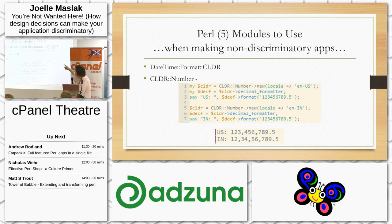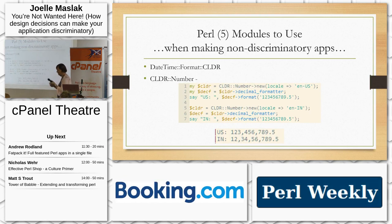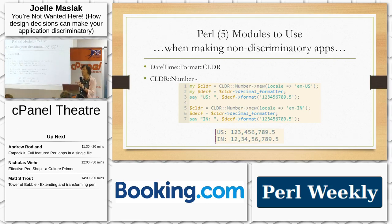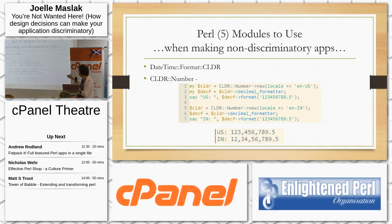Dates have the same issues. The two Perl 5 modules I recommend are DateTime::Format::CLDR and CLDR::Number. CLDR is the Unicode Common Locale Data Repository, which has information about how different locales represent dates and numbers. These formatters can present US or India formatted dates, among many others. I don't know the Perl 6 equivalents yet — if someone does, find me and let me know.